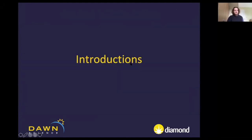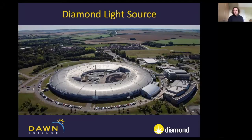Just to start with some introductions. Diamond Light Source is the UK's national synchrotron facility based in Harwell, just outside Didcot in Oxfordshire. We currently have 33 operational beamlines, of which two do small angle scattering. One has a variable camera length and is the workhorse of Diamond for small angle scattering, and the other is more reserved for biological scattering with a fixed camera length and fixed energy.